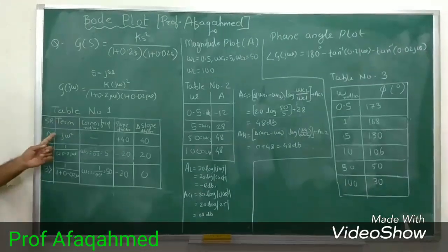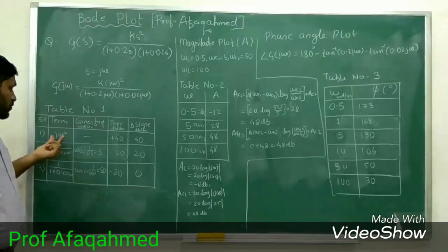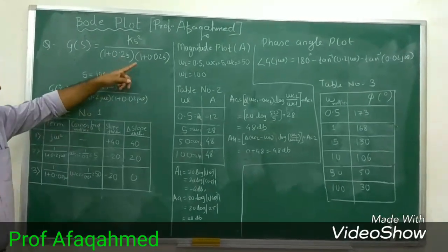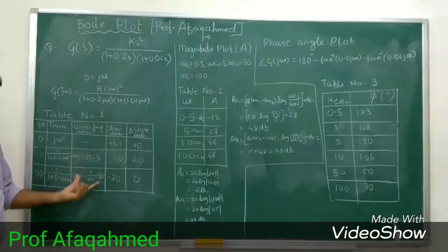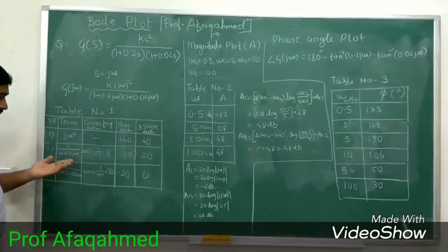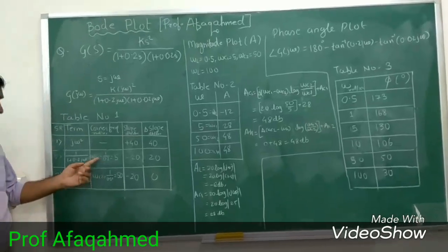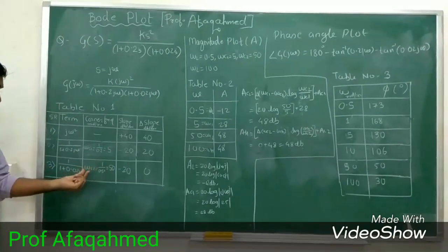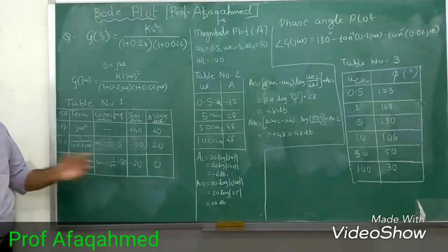The first term is (jω)² located in the numerator. The second term is 1/(1 + 0.2jω) and the third term is 1/(1 + 0.02jω). For the first term, corner frequency is marked as a dash. For the second term, corner frequency ωc1 = 1/0.2 = 5. And ωc2 = 1/0.02 = 50.